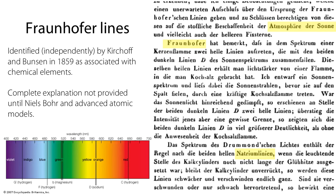Natrium — you might not be familiar with German, but you should be familiar with Na as an elemental symbol. Natrium is sodium. Here again is a version of the spectrum with the elements, and Fraunhofer labeled the main lines by letters of the alphabet: G, F, little B, big D, C. We now know that the D line is sodium, and we still call it the D line.